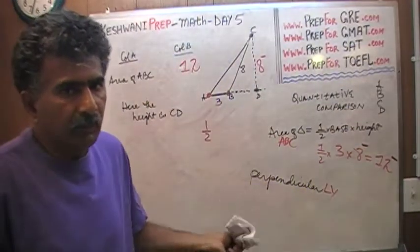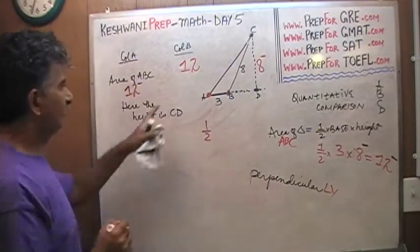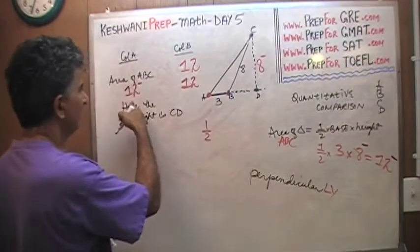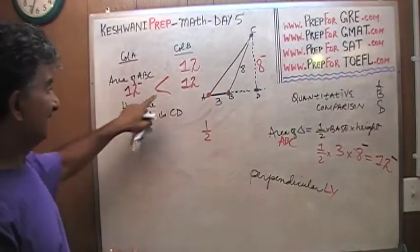We do not know what it is, but whatever it is, it's got to be less than 12. And since on the other side, we have a quantity of 12, something less than 12 has got to be less than 12. Something smaller than 12 has got to be less than 12.